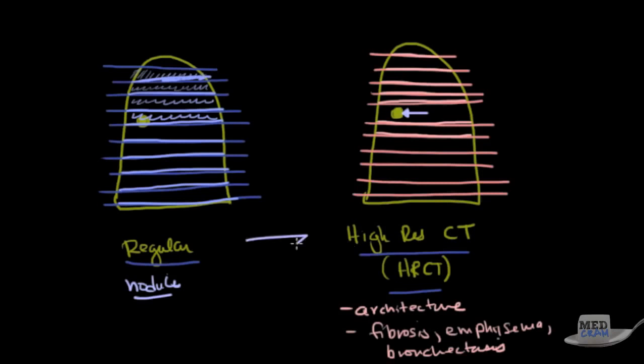So when do you order one versus the other? I would order a regular CT scan if you're looking for nodules or if you want to follow the size of nodules to see if they're growing. If, on the other hand, you're looking for architecture, for instance, you're looking for emphysema, you're looking for fibrosis, you're looking for bronchiectasis, you're looking for ground glass opacification, you're looking for a specific way something might look in terms of an infection or micronodular pattern, then you need to get a high resolution CT scan. Usually, this is done without contrast. So now you know how to order your CT scans. Thanks for joining us.